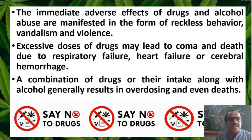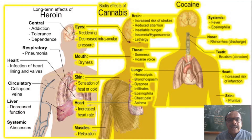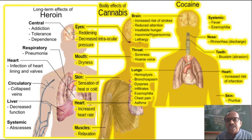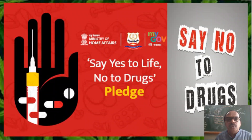The immediate adverse effects of drugs and alcohol abuse manifest as reckless behavior, unusual behavior, vandalism, and violence. Excessive doses may lead to coma or death due to respiratory failure, heart failure, and cerebral hemorrhage. The three most globally prevalent narcotic drugs — heroin, cannabis, and cocaine — affect different parts of the body. Heroin affects the central nervous system, respiratory system, heart, circulatory system, and liver. Cannabis affects the eyes, mouth, skin, heart, muscles, and brain. Cocaine affects the brain, throat, lungs, nose, teeth, heart, and skin. It is always good to say no to drugs — in any condition, medical or otherwise, please avoid taking any form of drug.